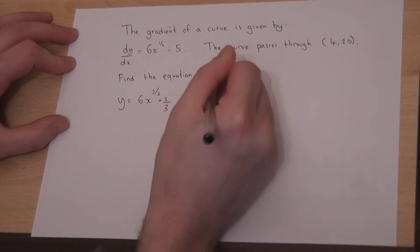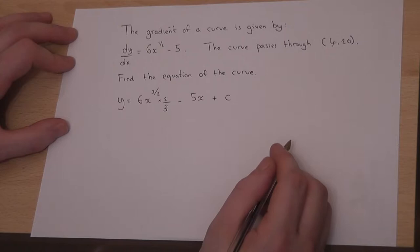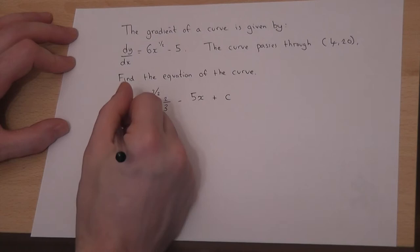Then the minus 5 goes to minus 5x, and we add c. So this is the equation integrated.